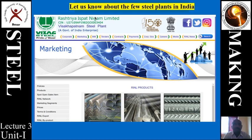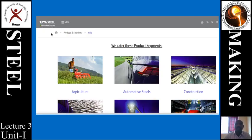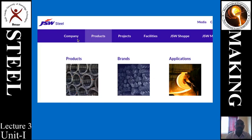Starting with Rashtriya Ispat Nigam Limited, also called Vizag Steel Plant or Visakhapatnam Steel Plant — its brand name is 'Vizag Steels, Pride of Steel,' which appears as trademarks and watermarks on products such as rods, sheets, pipes, and cubes. Tata Steel also has a blast furnace and LD converter, with continuous casting products and ancillary plants, and is mainly located in Jharkhand.